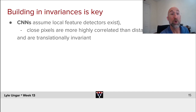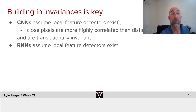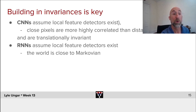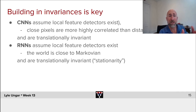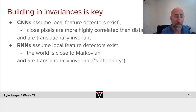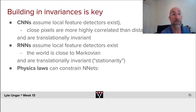Similarly, we've used the same sort of idea with recurrent neural nets or LSTMs — that there are local feature detectors, that there's local correlation structure across words or subword embeddings, that the world is close to Markovian, that you don't need to know as much about things that happened a long time ago. And in some sense there's translational invariance: whether you look at one sentence early or later in a document, they're mostly pretty similar with minor details.